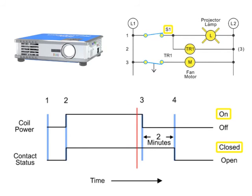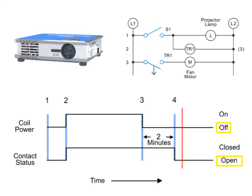When switch S1 is opened, the projector bulb turns off and power is removed from the timer. Contacts TR1 remain closed for a preset period of time and then open, causing the cooling fan to turn off. This off-delay timed open circuit is generally set to adequately cool the projector equipment before it shuts off.